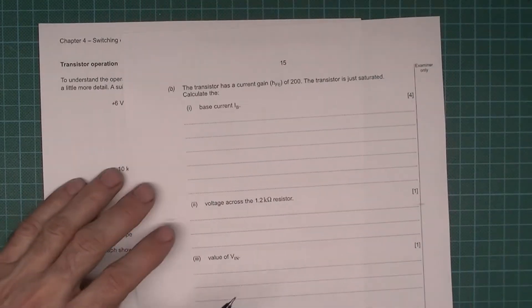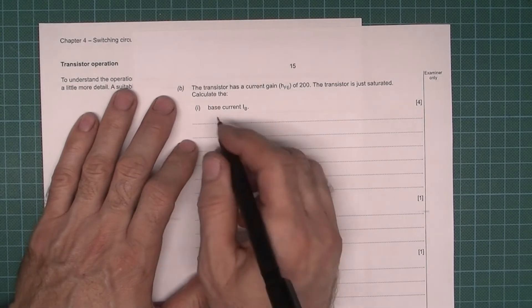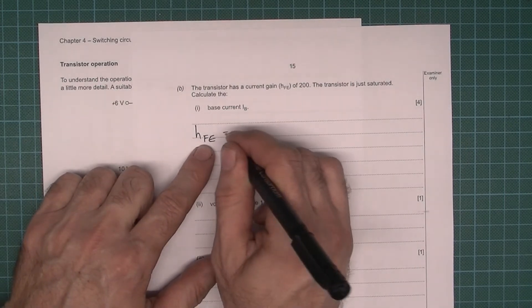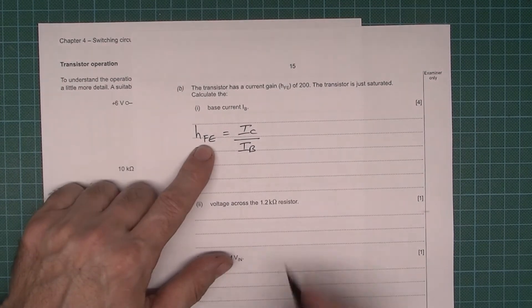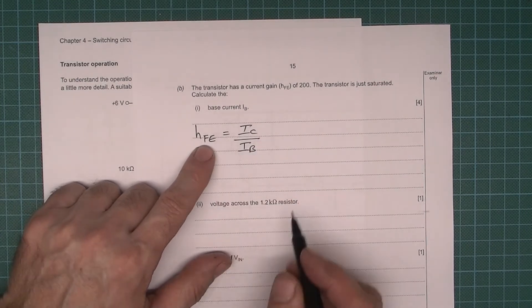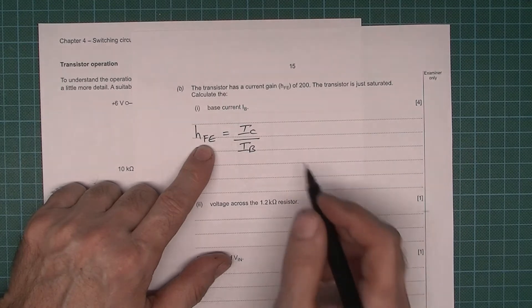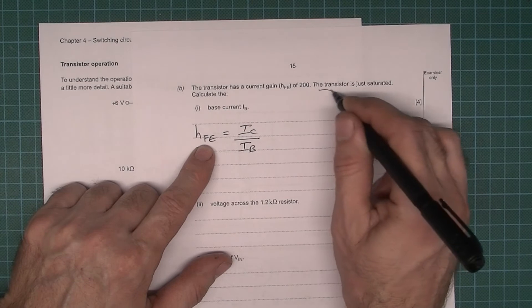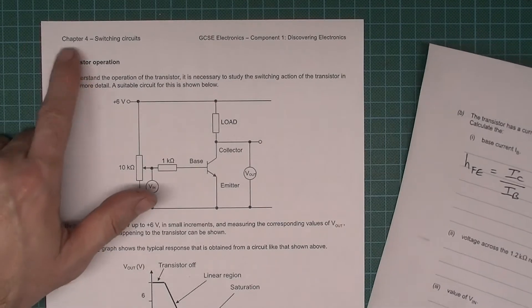Right, the transistor has a current gain of 200. Now the current gain, or HFE, let's just write the formula for that. Current gain H sub FE is the relationship between the collector current and the base current. So, for example, if your collector current is 10 times greater than the base current, then you have a gain of 10. Well, they say there's a gain, or relationship between those two quantities, of 200. So the collector current is going to be 200 times bigger than the base current when the transistor is just saturated. If you're not sure about that, just have a look at the chapter 4 notes.